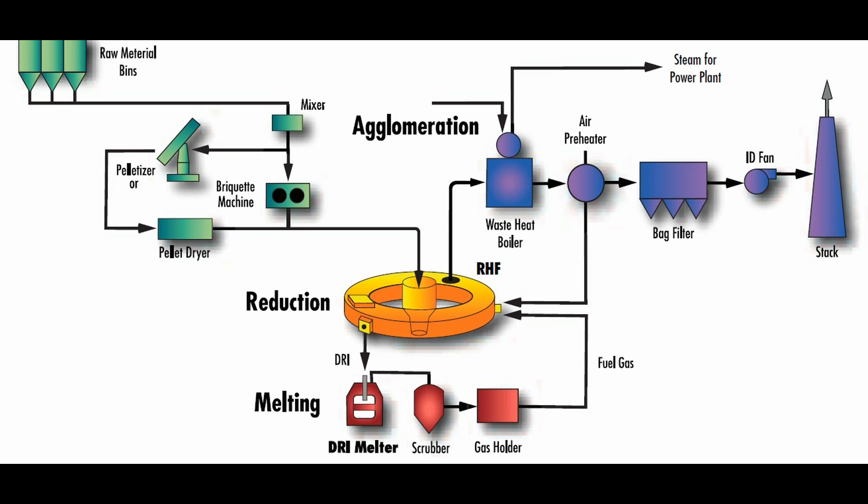FastMelt uses the same rotary hearth furnace as FastMelt, but adds a melting furnace to produce a high-quality hot metal product. As with FastMelt, the feed materials are steel mill by-products, and carbon contained in the feed or added as coal, charcoal, or other carbon-bearing solid is used as the reductant.